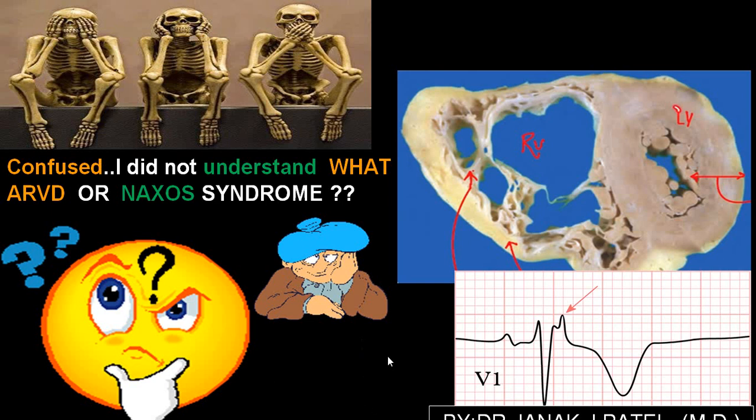All my video lectures are mainly for educative purpose. In continuity with the previous ECG series, today I am going to discuss a common disorder which we usually skip or miss. It is not very uncommon, neither is it very rare. We will be talking about ARVD, or arrhythmogenic right ventricular dysplasia, also called arrhythmogenic right ventricular cardiomyopathy, and another group called Naxos syndrome. These two things we will be discussing together.